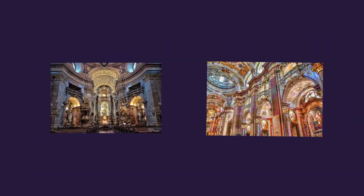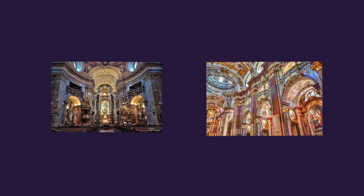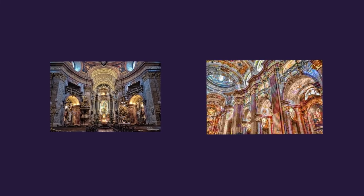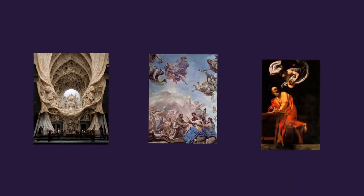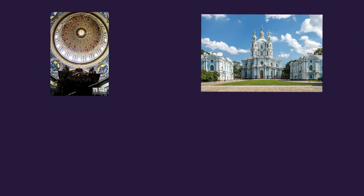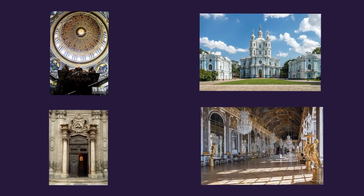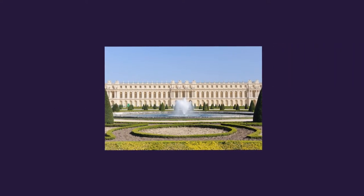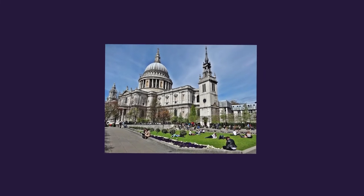Baroque architecture started to lavish buildings in the early 1600s. It is characterized by complex shapes, extravagant ornamentation, opulent paintings and bold contrast. Features include domes, central towers, porticos, colonnades and highly decorated interiors. A great example of Baroque architecture is the Palace of Versailles in France. Another example is St. Paul's Cathedral in London.